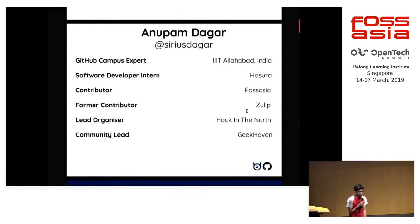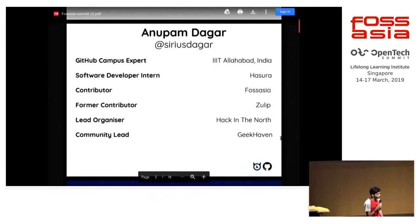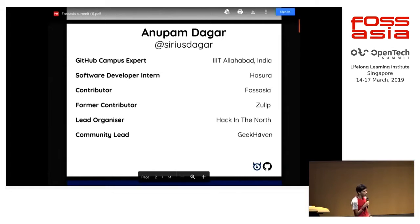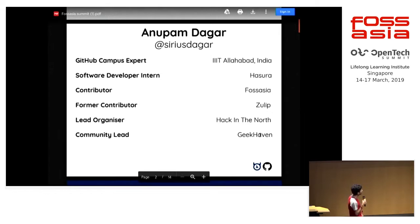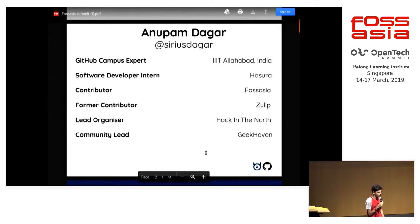My name is Anupam Dagar. I'm a GitHub campus expert from IIIT Allahabad in India. I have been a software developer at Hasura, a former contributor at Zulib, and currently contributing to Foresh Asia. I'm a community leader of Geekhaven and have been the main core team member organizing the Hackathon.